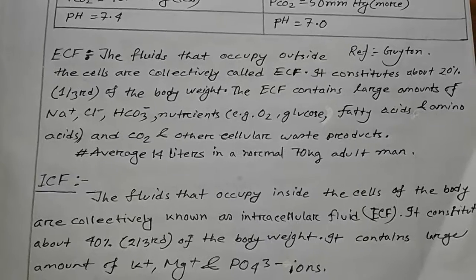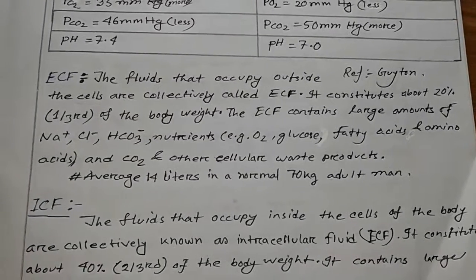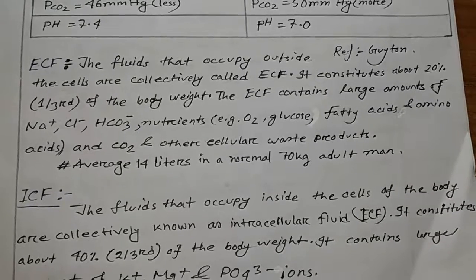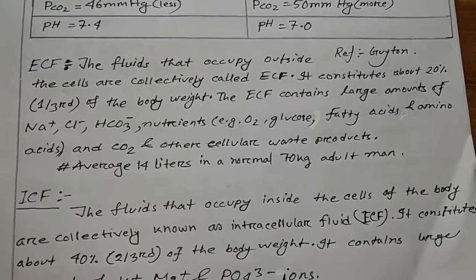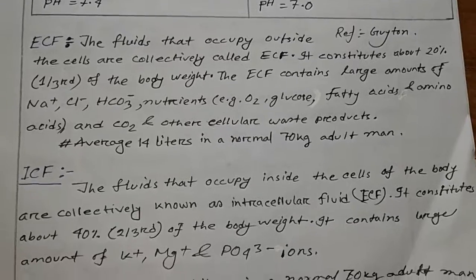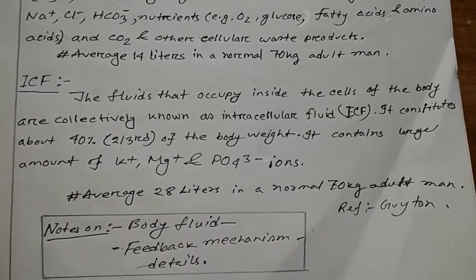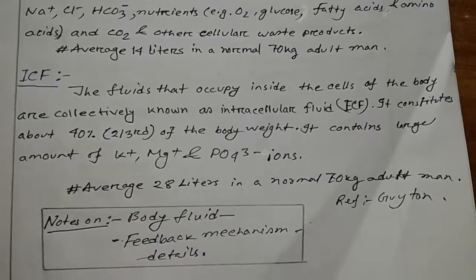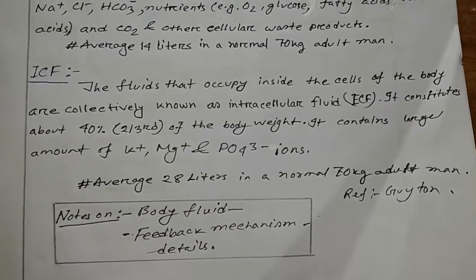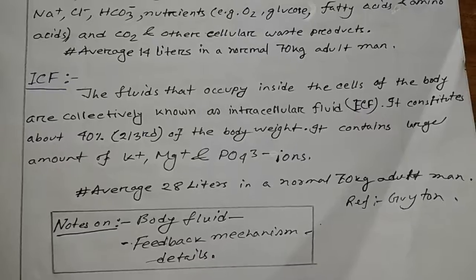Definition of ECF: The fluids that occupy outside the cells are collectively called ECF. It constitutes about 20%, one-third of the body weight. ECF contains large amounts of sodium, calcium, hydrogen, bicarbonate, nutrients such as oxygen, glucose, fatty acids, and amino acids, and carbon dioxide and other cellular waste products. It contains an average of 40 liters in a normal 70 kg adult. ICF: the fluids that occupy inside the cells of the body are collectively known as intracellular fluid or ICF. It constitutes about 40%, two-thirds of the body weight. It contains large amounts of potassium, magnesium, phosphorous, and phosphate ions — average 28 liters in a normal 70 kg adult.